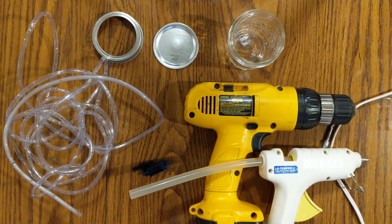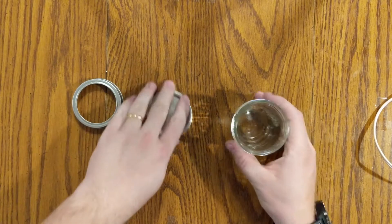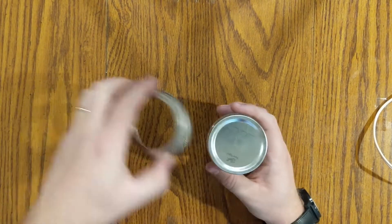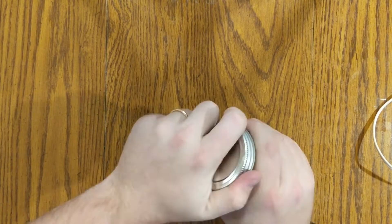So now we have all our materials together, let's go ahead and get started. The first thing we're going to do is put our lid back on our mason jar. That's just to hold it tight while we're drilling it.